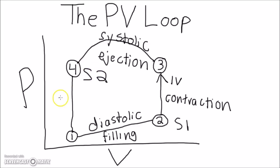Finally, at point 4, the aortic valve snaps shut, producing the S2-DUB heart sound, and isovolumetric relaxation occurs from 4 to 1.